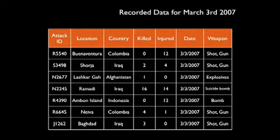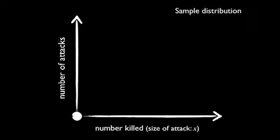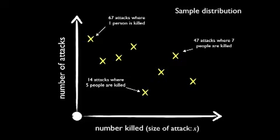And once we had this, we could start doing some cool stuff. What if we were to look at the distribution of the sizes of attacks? What would that tell us? And so we started doing this, and you can see here on the horizontal axis, you've got the number of people killed in an attack, or the size of the attack. And on the vertical axis, you've got the number of attacks. And so we plot data for a sample on this, you'll see some sort of random distribution — perhaps 67 attacks where one person was killed, or 47 attacks where seven people were killed.